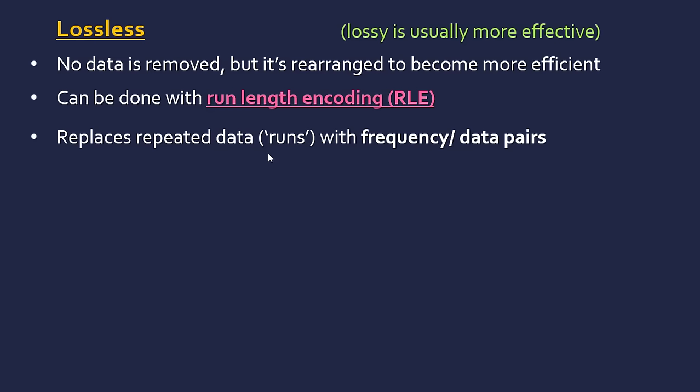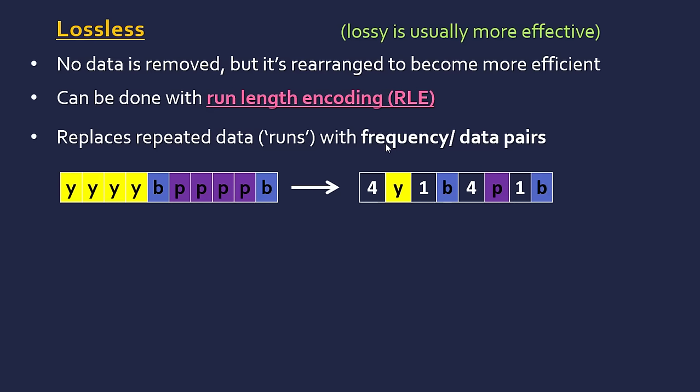An image is a common place where this might be used. You have blocks of colors in an image—four yellow, one blue, four purple, then another blue. You could replace this with frequency-data pairs: four lots of yellow, one lot of blue, four lots of purple, and one lot of blue. This is most effective when you have lots of blocks of color.